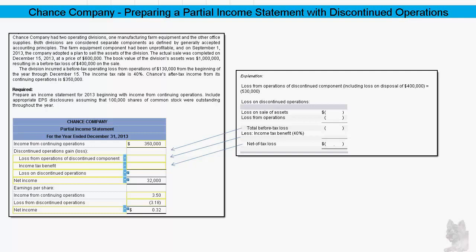You're asked to prepare an income statement for 2013, beginning with income from continuing operations, including appropriate earnings per share disclosures, assuming that 100,000 shares of common stock were outstanding through the year. I've prepared part of the answer for you, which I hope is helpful.